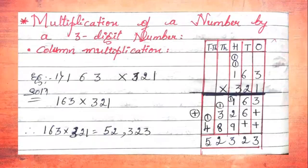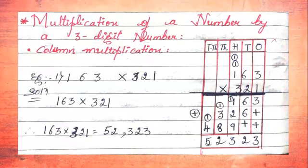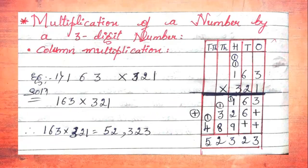The next topic in this unit is multiplication of numbers by a three-digit number. First we go through column multiplication. The first example: the given number is 163 × 321. Here 163 is the multiplicand, 321 is the multiplier. We need to find the product using column multiplication, so we draw the table with place values.